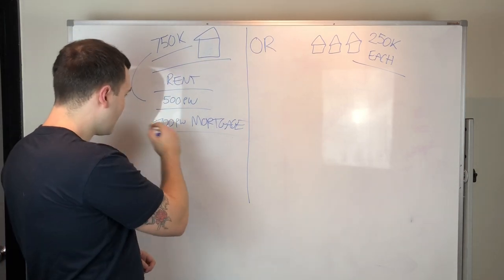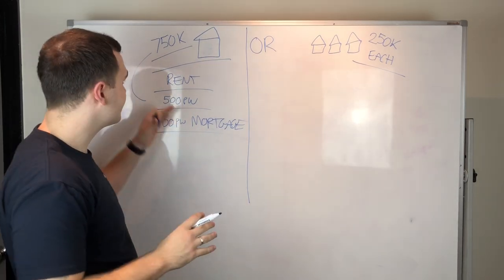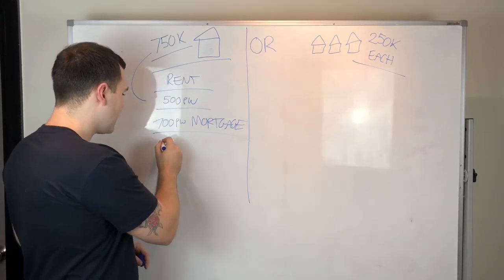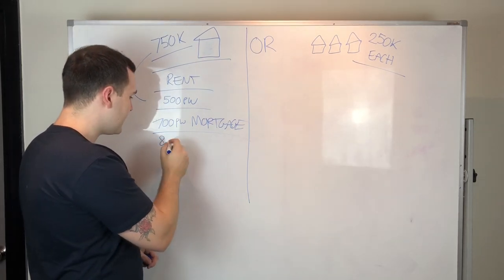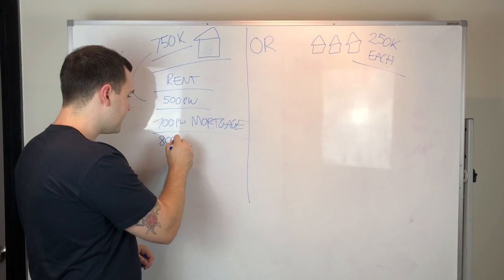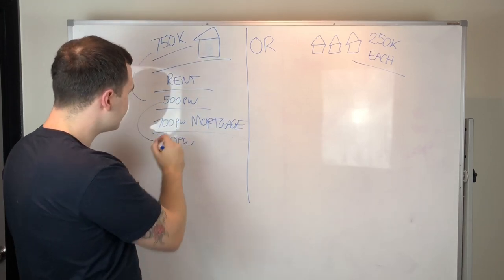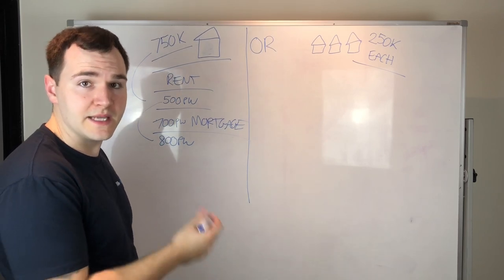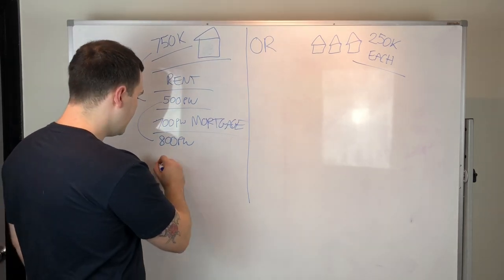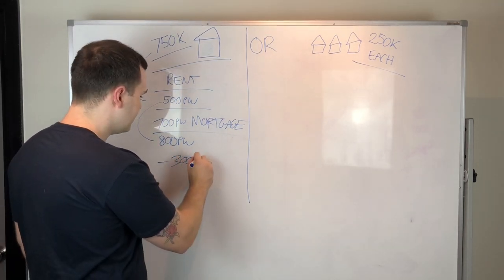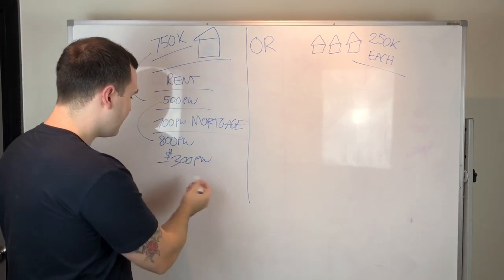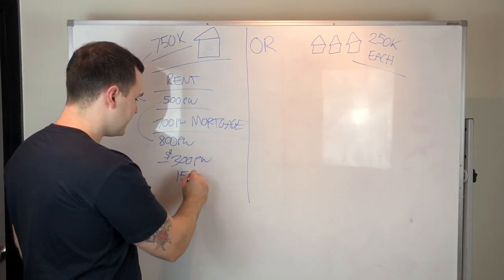That stuff can equal out to another $100 per week minimum as well. So the total holding expenses for this property at $750,000 is probably going to be $800 to $900 a week, say $800 per week, and you're only getting $500 rent. So you're automatically losing $300 per week in holding this property, or $15,000 per year.